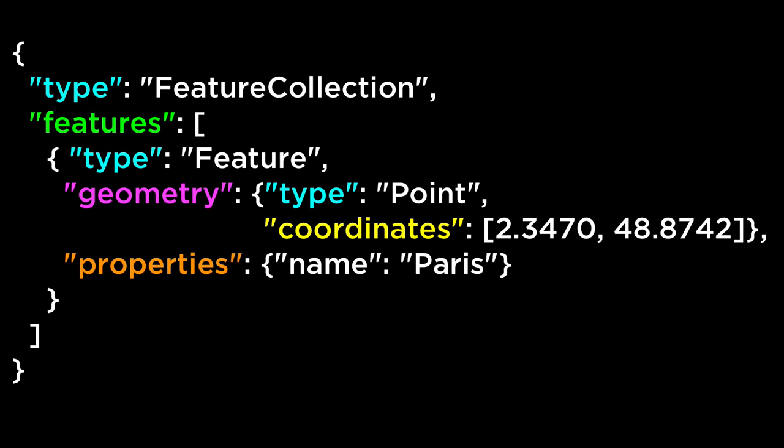Wikipedia describes GeoJSON as an open format for encoding collections of simple feature objects along with their non-spatial attributes using JavaScript object notation — which now makes perfect sense.